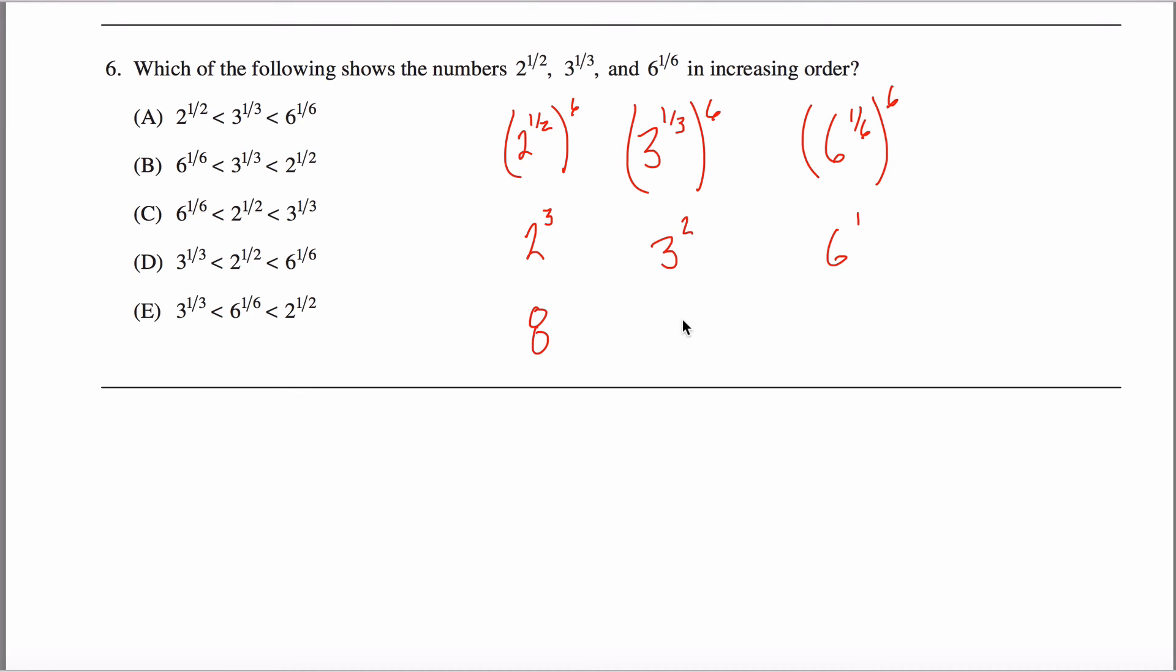Well, two to the third power is eight. Three to the second power is nine. And six to the first power is six. So what that's telling me is that this guy is the smallest, six to the one-sixth power. And then the second smallest is two to the one-half. And then the third smallest, the largest, is three to the one-third. Looks like my answer is C.